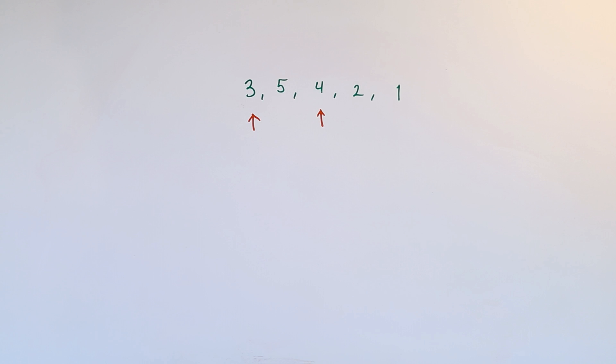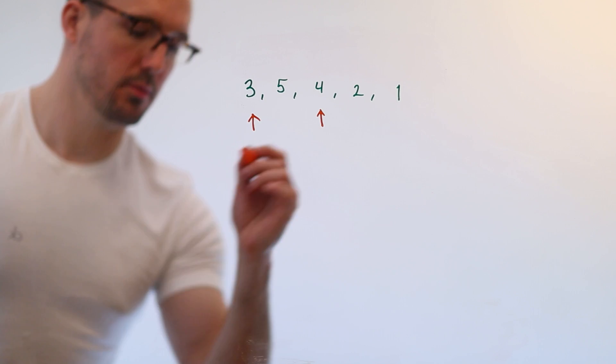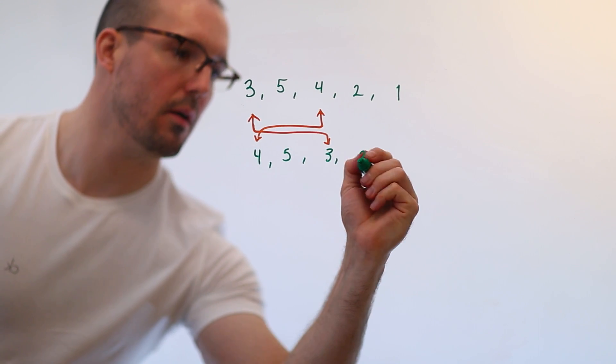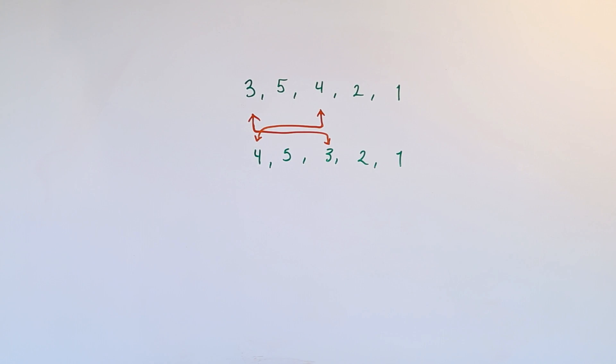That in order to implement lexicographic incrementation, when you find the decrease, the next thing you have to find is what's the next biggest number that should go in that spot. So you find that number, which in this case is four, and then you swap those numbers. You replace the four with the three and the three with the four. So then what you have would be four, five, three, two, one.